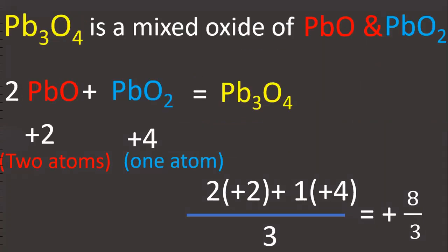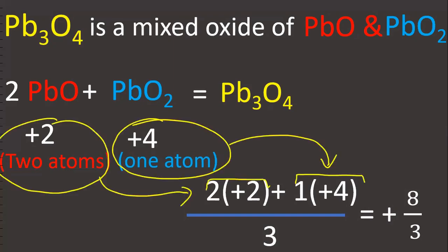Now in this, in PbO₂, one lead atom, but two molecules are taken. So, two lead atoms. Two lead atoms into +2 oxidation state, it is +4. In PbO₂, one lead atom into +4. Total number of lead atoms, 3, divided by 3.